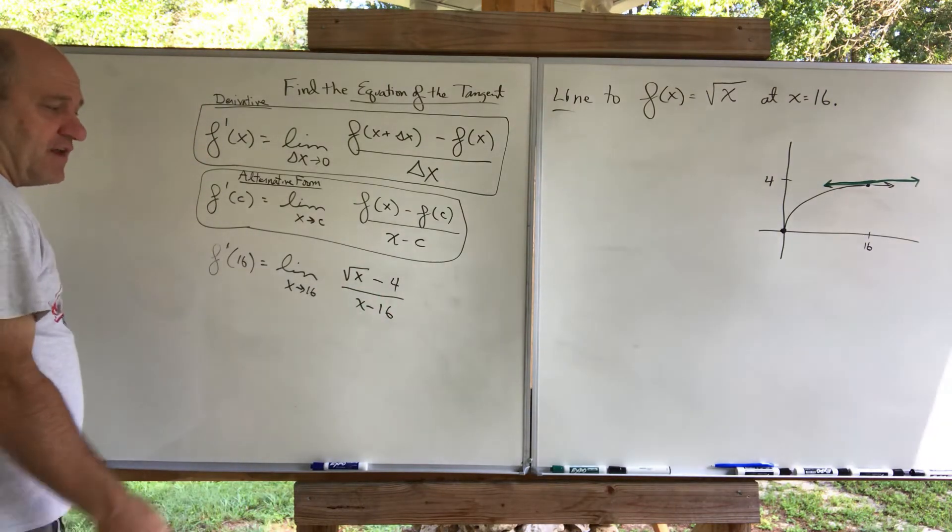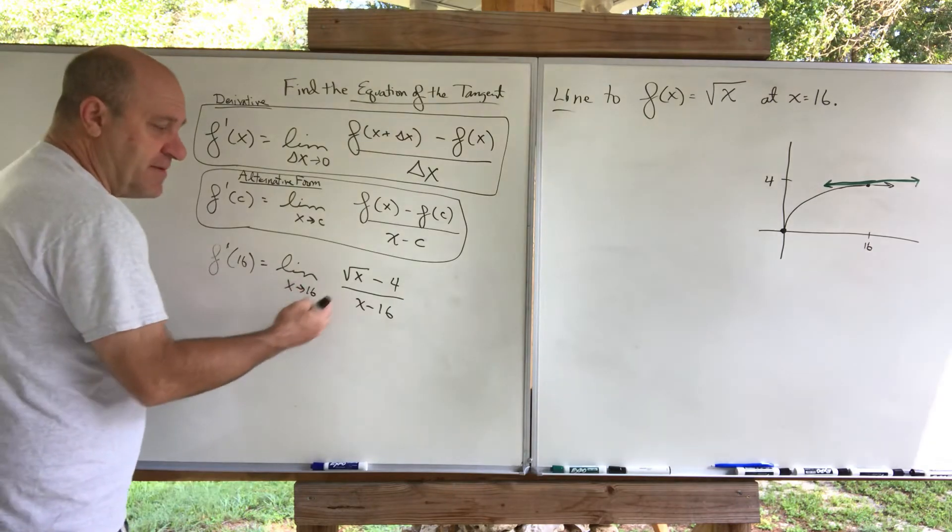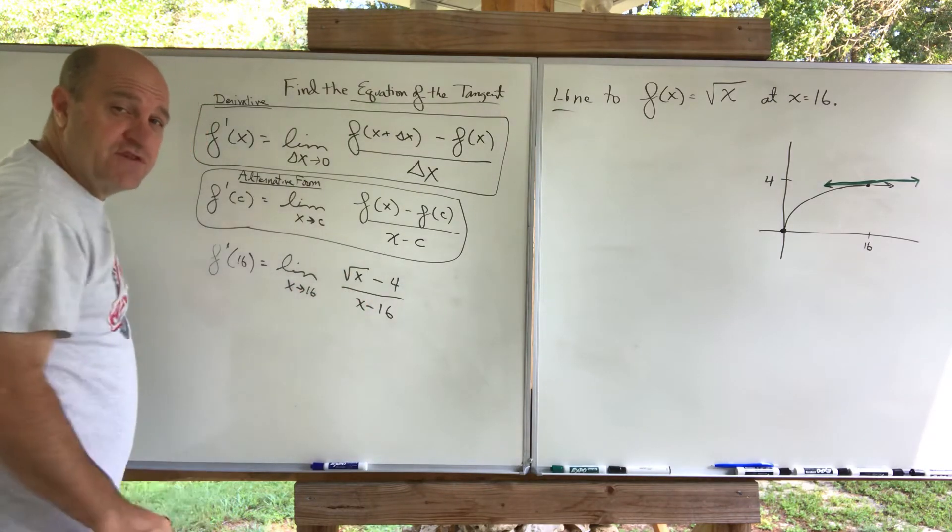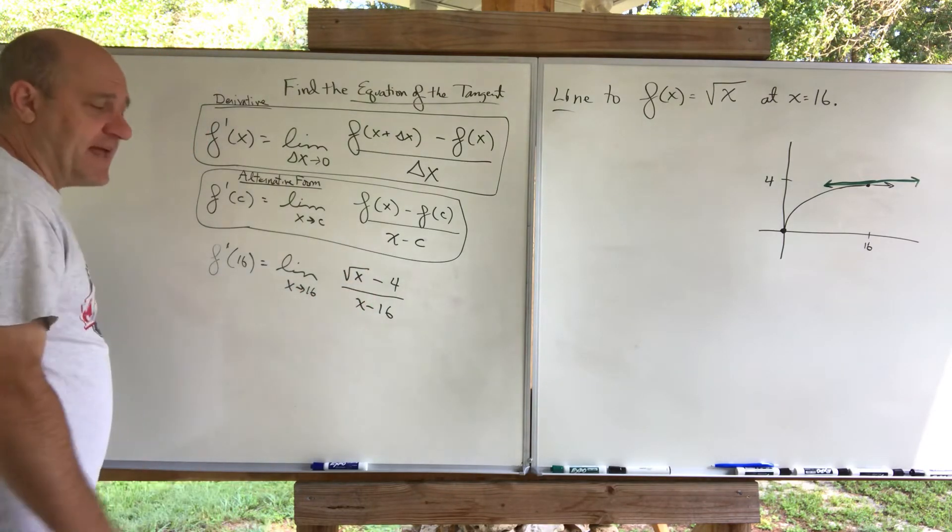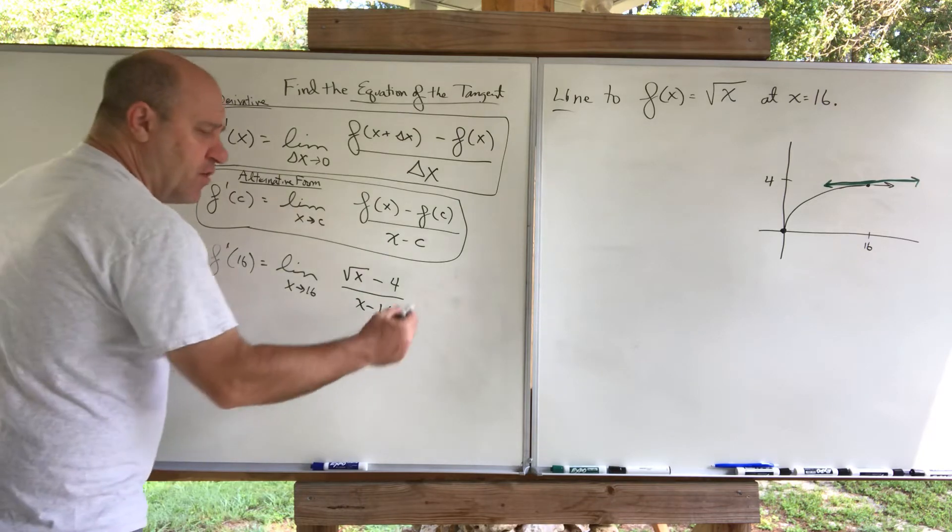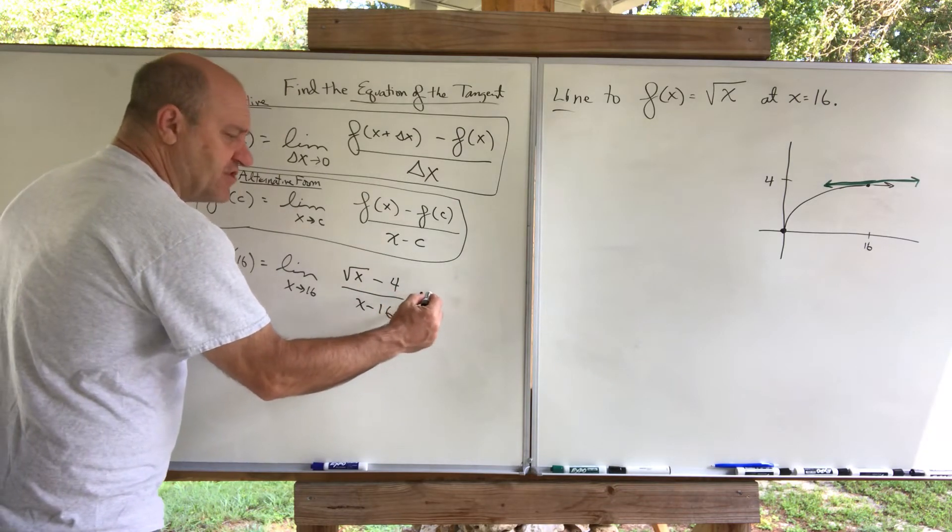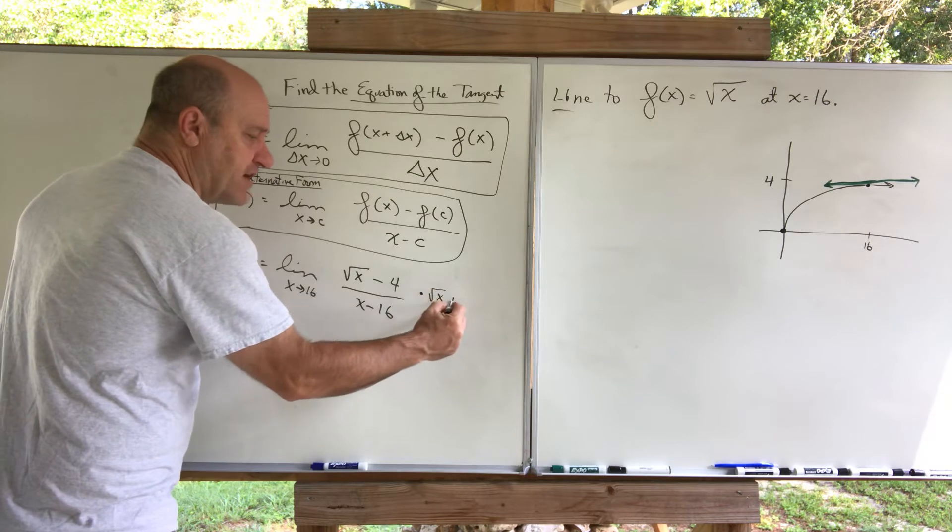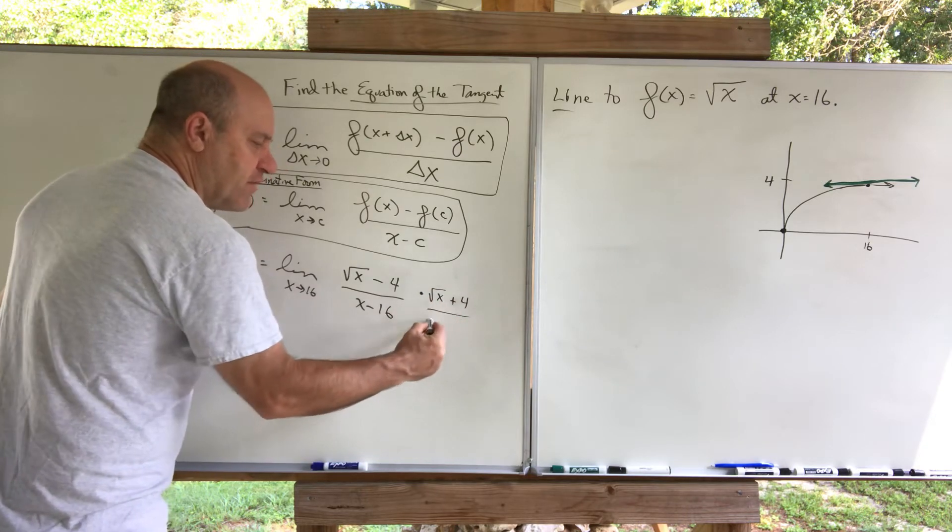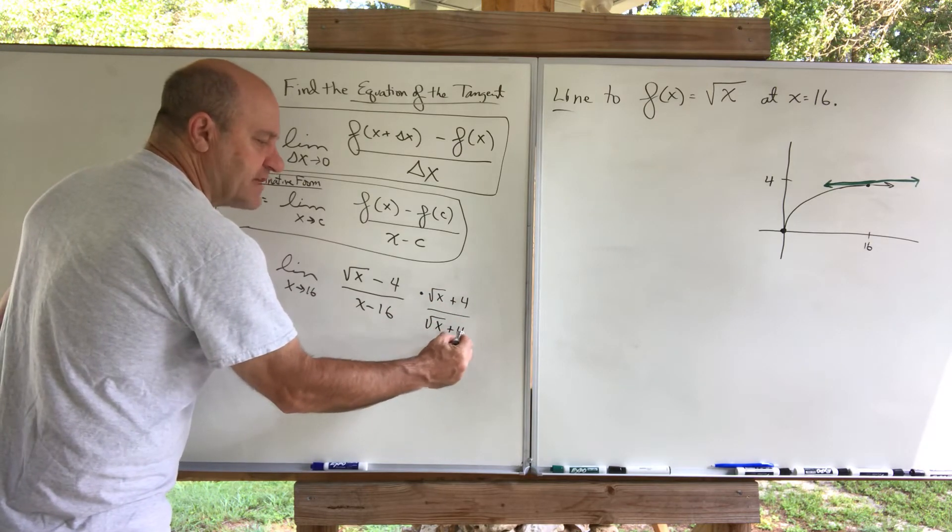So there you go. I've got to do this limit. If I try to do this limit right now, I get 0 over 0. We worked on some limits like this back in chapter 2. What we do is we multiply by the conjugate. If I multiply by the square root of x plus 4, and the square root of x plus 4, everything works out.